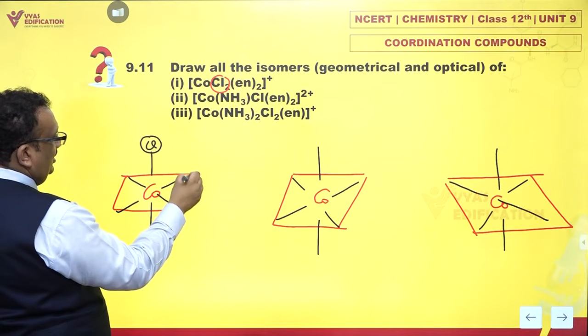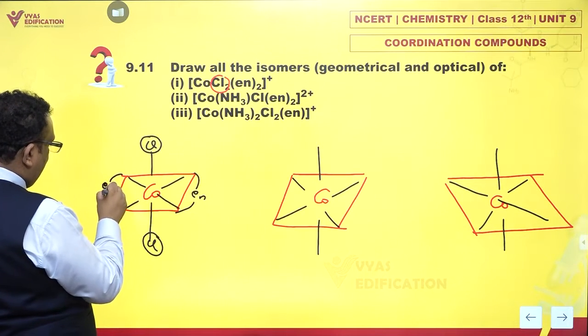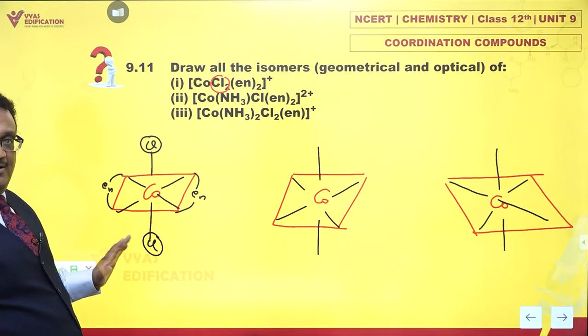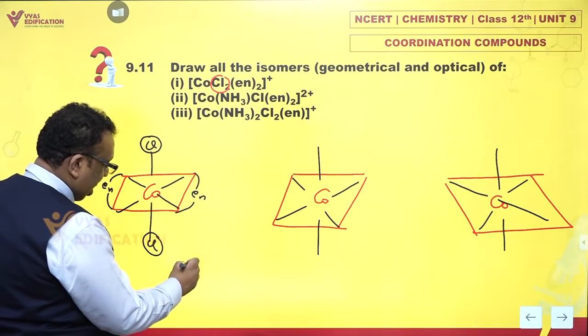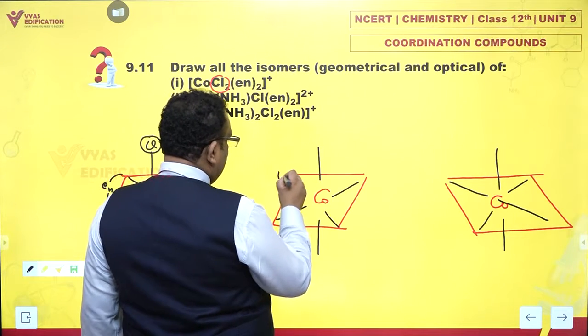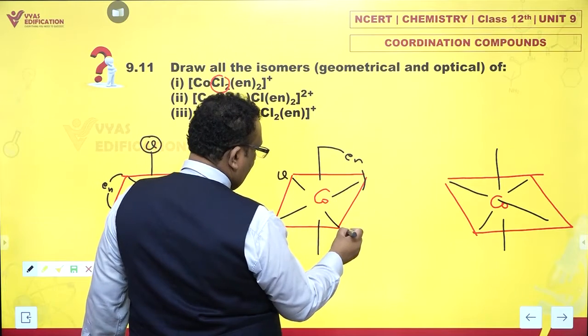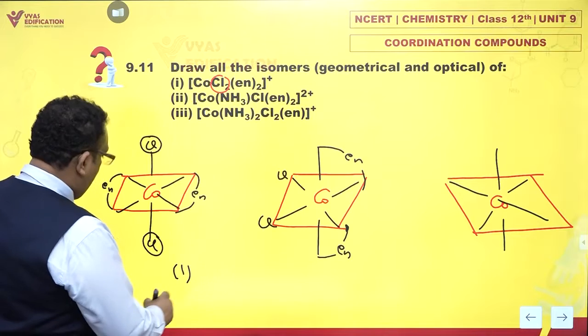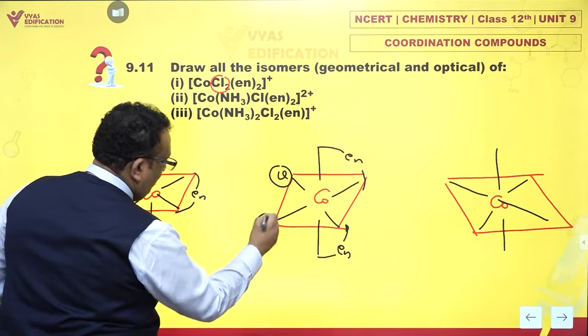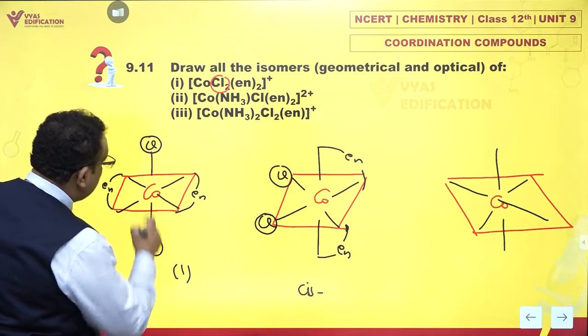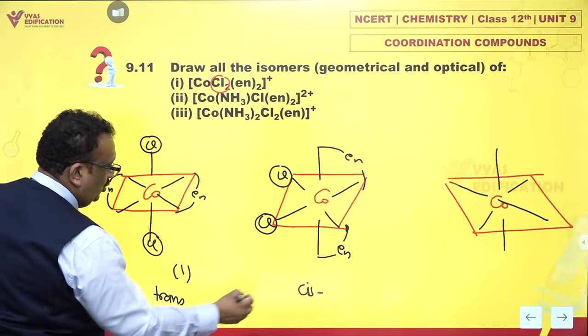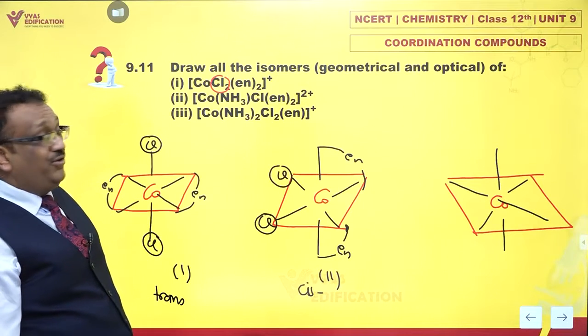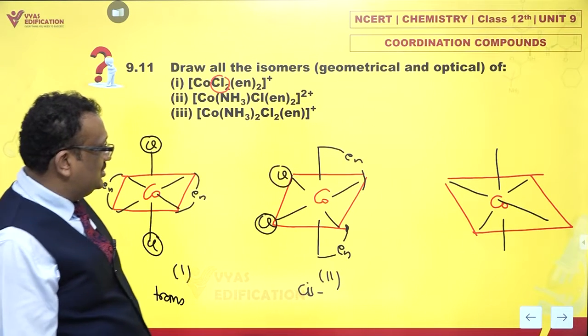If Cl atoms are trans to each other and we have en like this, this is the way we draw this. This is one. But then at the same time, Cl atoms could very well be cis to each other also. These Cls are trans, and one and two are geometrical isomers.